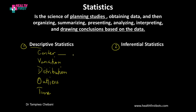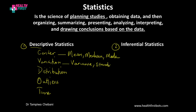To measure center, we use measures of center, and the three measures of center are mean, median, and mode. For variation, we use variance and standard deviation. You can also use range and mid-range, but those are seldom used. Variance and standard deviation are reliable measures of variation.